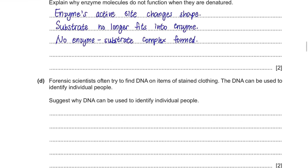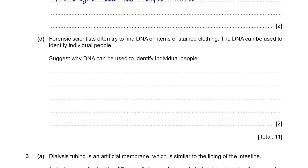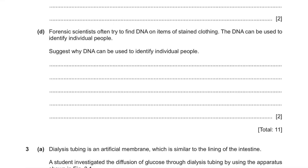Part D: Forensic scientists often try to find DNA on items of stained clothing. The DNA can be used to identify individual people because individual people have unique DNA of their own — this is because DNA has genes formed of different sequences of bases.